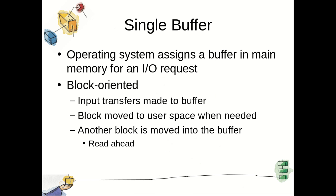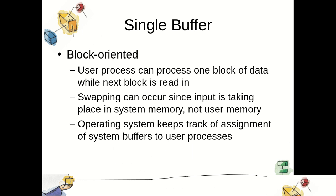The first type of buffering is the single buffer. The operating system assigns a buffer in main memory for an IO device. Block-oriented input transfers are made to the buffer and then moved to user space when needed. Input transfers are made to the system buffer, and when the user process is processing one block of data, the next block can be read into the system buffer. For output, data to be sent to the output device is copied into the system buffer, from which it will be picked up by the IO device.